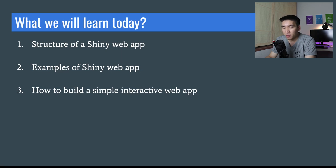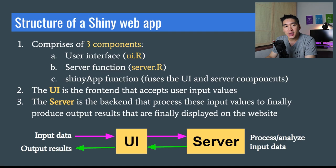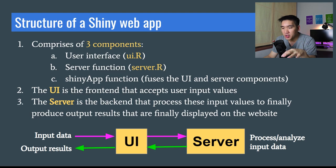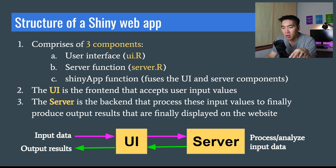Finally, we'll show you step by step how you can build your interactive web application. A Shiny web app comprises three components. The first is the user interface, housed in a file called ui.R. The second is the server function, which performs data processing, housed in server.R. The Shiny app function then fuses the UI and server components together.